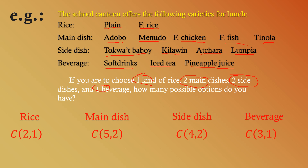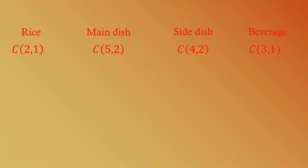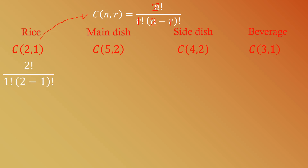Converting to factorial notation using n! over r! times (n−r)!: For rice, C(2,1) = 2! over 1! times (2−1)! = 2! over 1! times 1!. Simplifying: 2 divided by 1 times 1 equals 2.